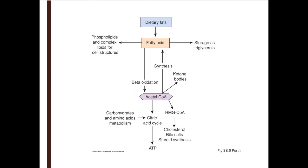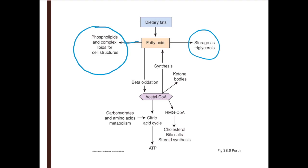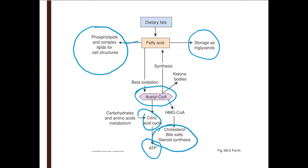For fat metabolism — the liver takes dietary fats, breaks them down into fatty acids, stores them as triglycerides, or forms phospholipids to maintain cell structure. We can break them down again to get acetyl-CoA, which can go into the citric acid cycle and create energy, or use part of that to create the bile salts we need.